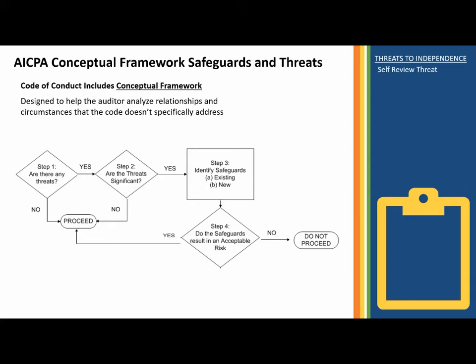What are some threats to independence? First, there's the self-review threat — that's when you do work and then turn around and audit your own work. You can't audit your own work. Next is the advocacy threat, where you become so invested in the mission of the client that you lose your professional skepticism through the process.